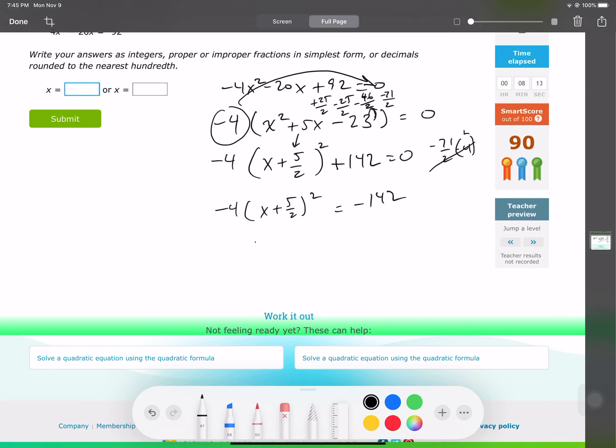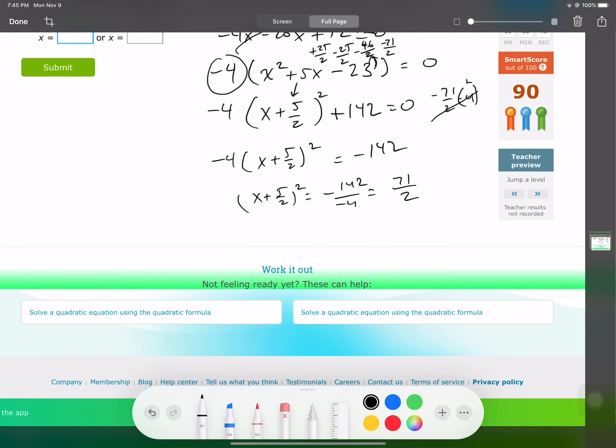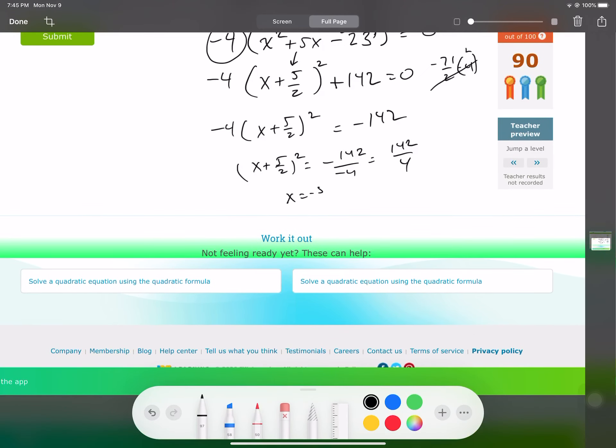We're going to divide this by negative 4. x plus 5 over 2 squared is equal to 142 over 4. I'm actually not going to reduce that, because I actually need the 4 for the square root. We're going to take the square root of both sides. x equals negative 5 over 2 plus and minus the square root of 142 over 4. We can reduce that. This is all equal to negative 5 plus and minus the square root of 142 over a common denominator of 2.